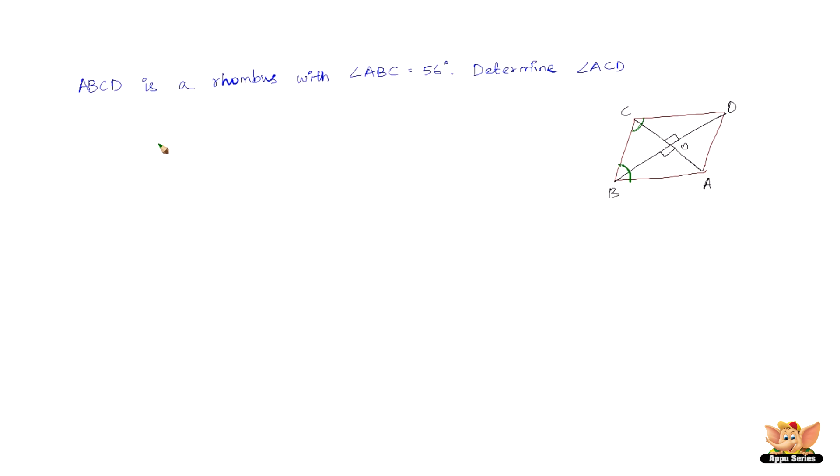Now ABCD is a rhombus. Now we also know that all the rhombuses are parallelograms, but it is not vice versa, all the parallelograms are not rhombuses. Only when the diagonals intersect at 90 degrees, then we can call them rhombus, but all the rhombuses are indeed parallelograms. So we can also say that ABCD is a parallelogram.